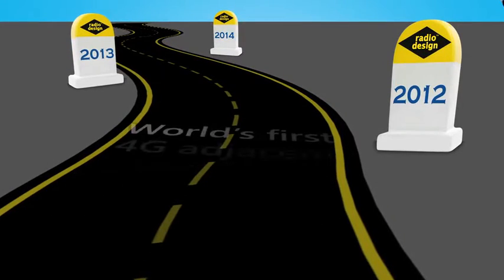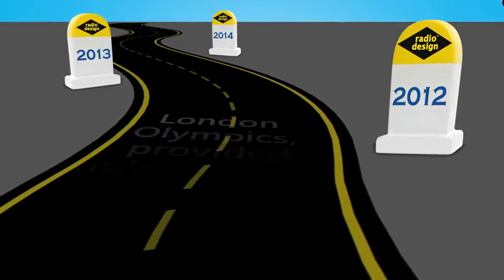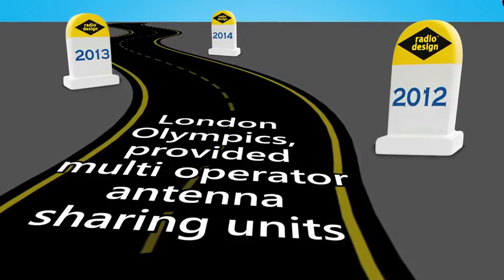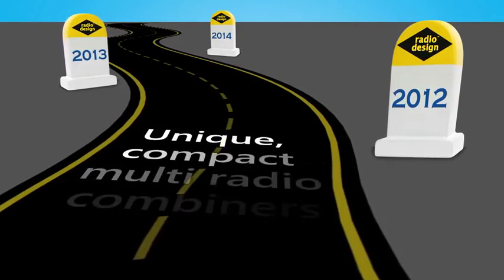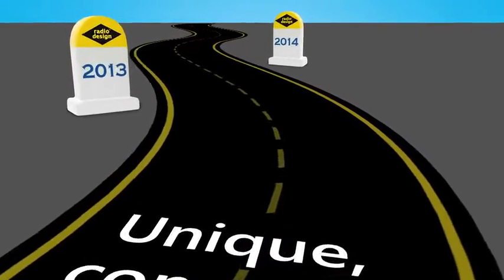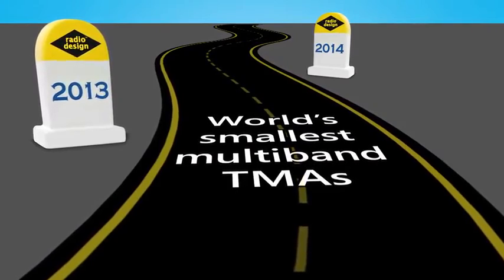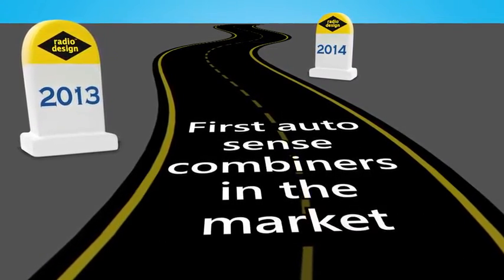2012: world's first 4G-adjusted spectrum combiners. 2012: London Olympics provided multi-operator antenna sharing units. 2012: unique compact multi-radio combiners. 2013: world's smallest multiband TMAs. 2013: first AutoSense combiners in the market.